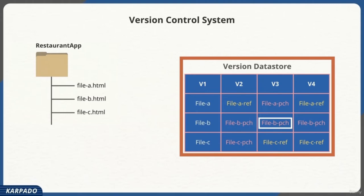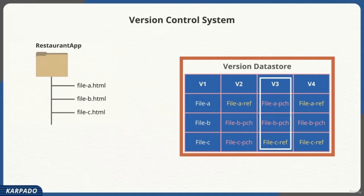Sundar instructs the VCS software to revert to version 3 of file B. The VCS software picks up the original copy of file B, then applies all the patches that came after it up to version 3, reconstructing version 3 of file B and returning it to Sundar. Similarly, Sundar can write a command instructing the software to get the entire project to version 3, and the software will do just that.